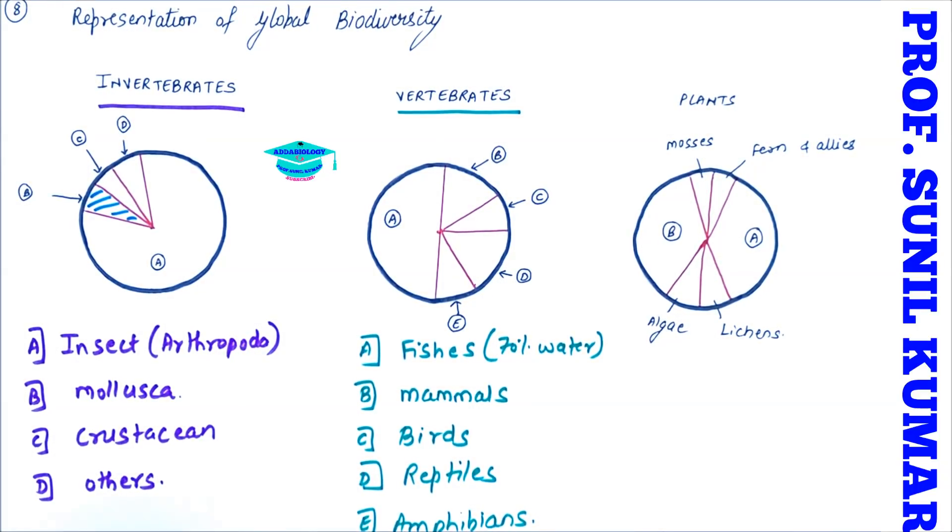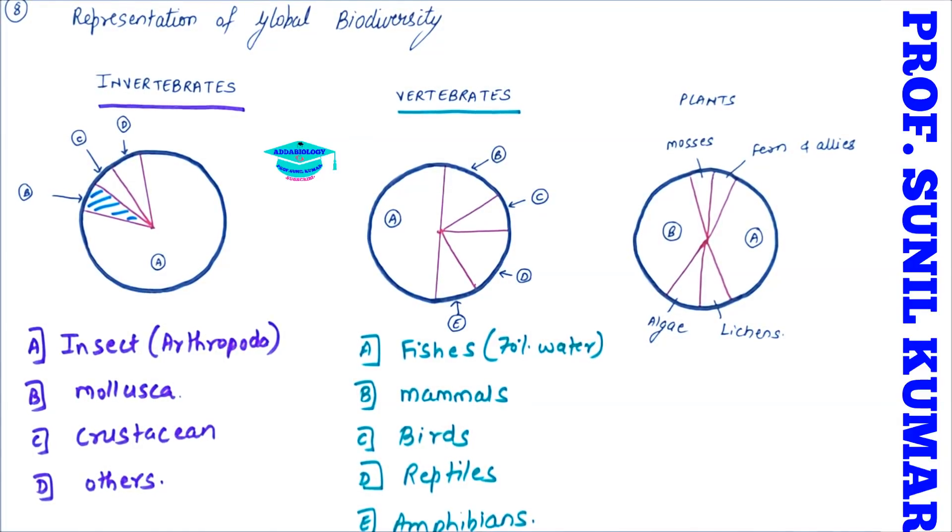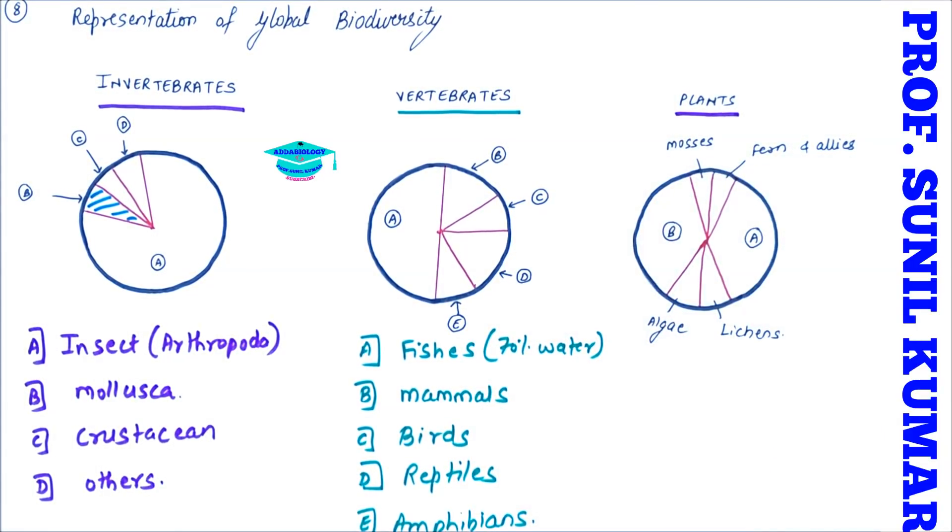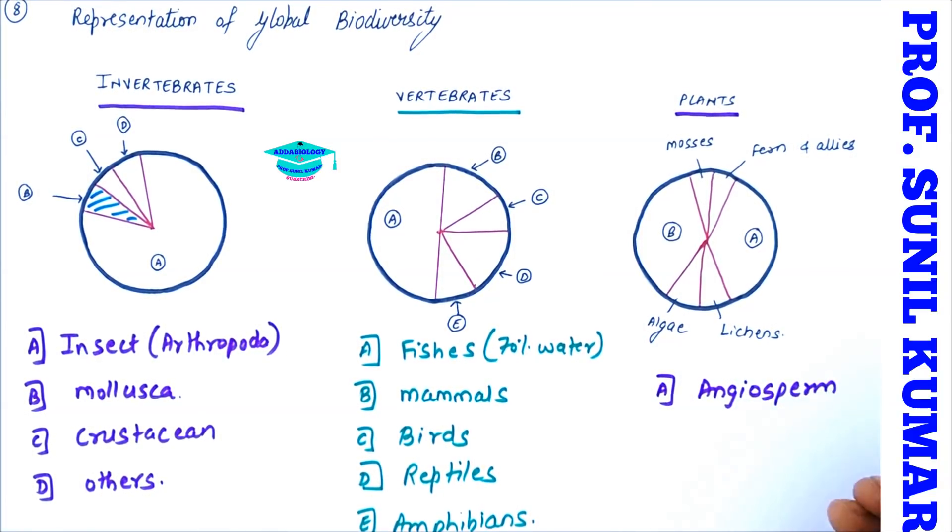So this is how you can remember this diagram. When you talk about the plants, the bigger area is A and B. So when I talk about my right side of this, it is angiosperm, the most evolved plants. The left side talks about fungi. So the most major part which is occupied by the plants is angiosperms and the fungi.